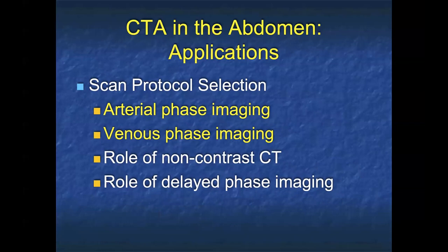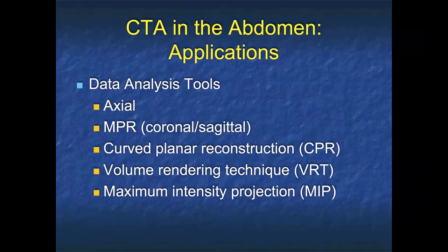I like to do dual phase imaging. We don't do non-contrast CT, and I don't see a need for a delayed phase. Arterial at roughly 30 or 35 seconds and venous at about 70 seconds works very well. That really optimizes lesion detection as well as lesion discrimination. If you only look at axial images, that's probably the number one reason for missing small bowel tumors. Particularly smaller tumors will be missed if you don't, at a minimum, look at the coronal views. And 3D, particularly MIP and volume rendering, can be very helpful.